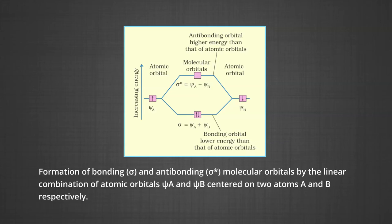The molecular orbital σ formed by the addition of atomic orbitals is called the bonding molecular orbital, as depicted in the figure. Formation of bonding (σ) and anti-bonding (σ*) molecular orbitals is represented by the linear combination of atomic orbitals ψ_A and ψ_B centred on two atoms A and B respectively.